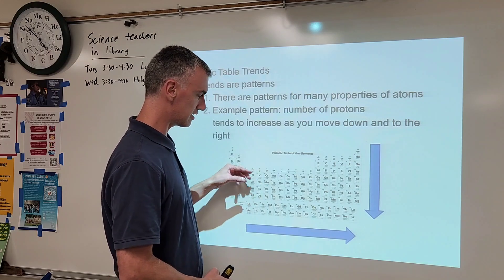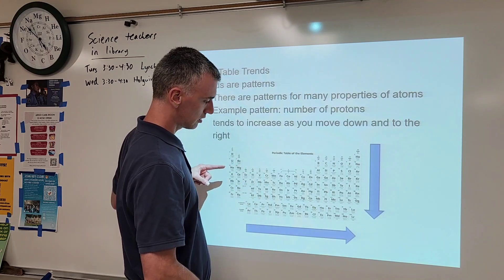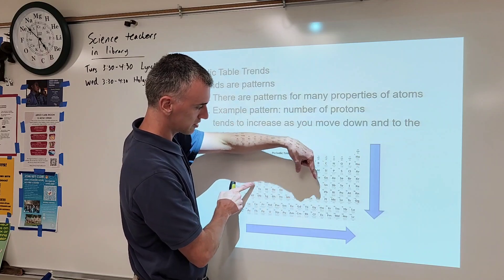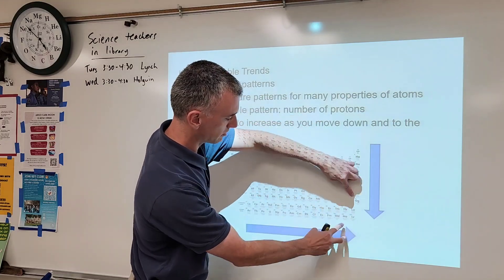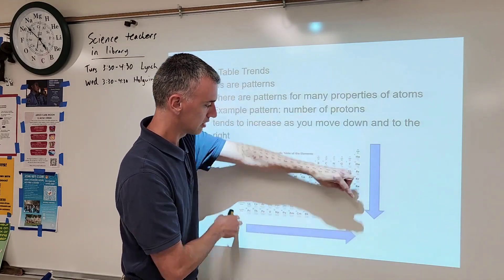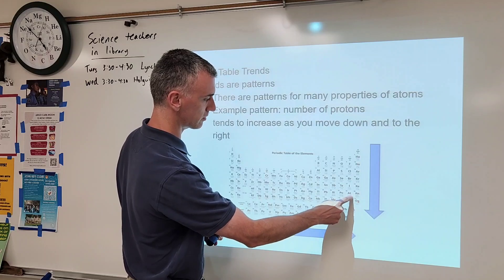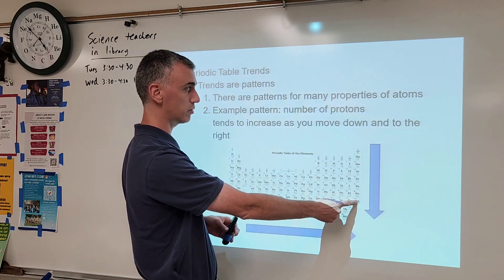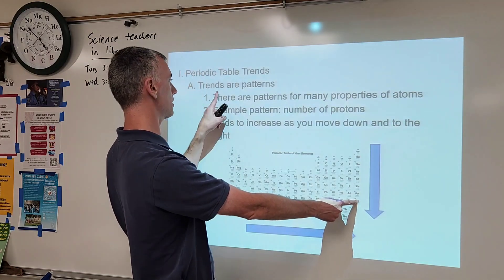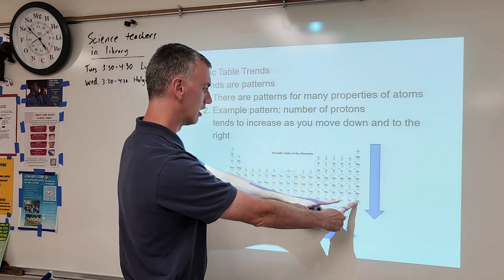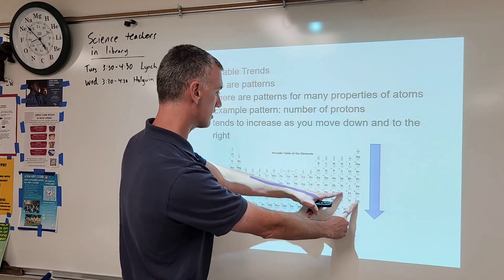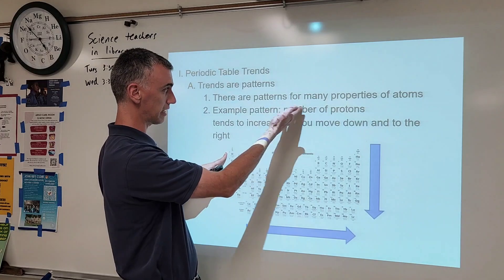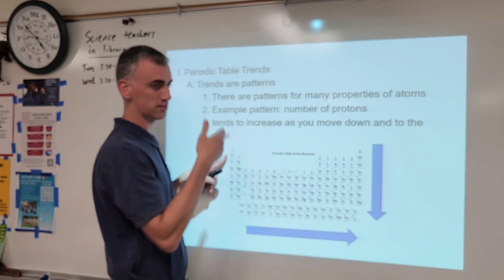So, as you go downward and toward the right — that part of the periodic table — this corner would have the greatest number of protons because this is where the pattern is at its greatest. The opposite corner would be where the pattern is least, meaning the least number of protons.